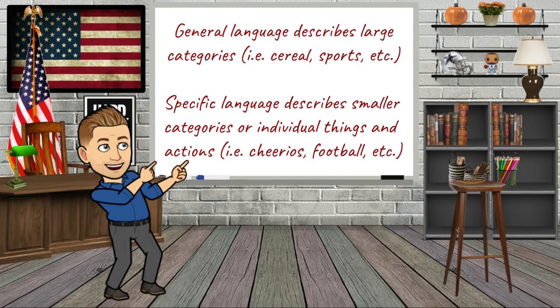First, we've got to understand: general language is going to be something that describes a large category — for example, cereal or sports. Specific language describes smaller categories or individual things and actions. So instead of cereal, maybe we're talking Cheerios. Or instead of sports, we're talking football. By understanding that we need to get more specific as we go into each paragraph, that's going to help us add some depth to our writing.